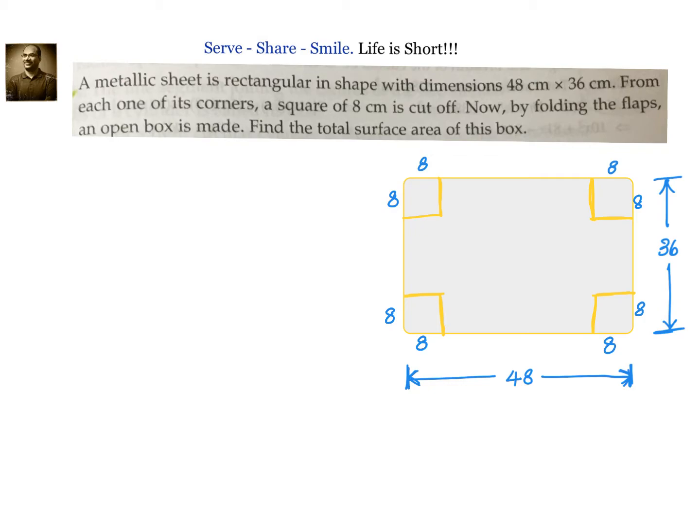Let us see what is left out. Now, what is left out looks like this. Whatever we see in red color that is what is left out. Now, because we have removed 8 by 8 from all the 4 corners.